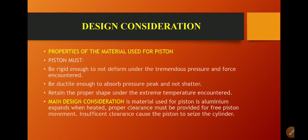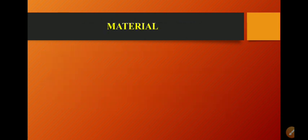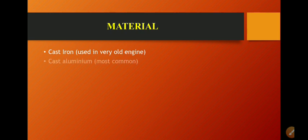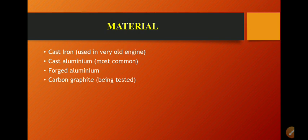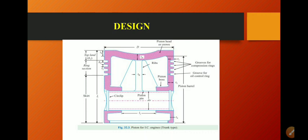When designing the piston, the proper clearance must be provided for free piston movement. If you provide insufficient clearance, it causes the piston to seize in the cylinder. If you provide too much clearance, it causes oil leakage from the cylinder. So the main design consideration is that proper clearance must be provided. Materials used for pistons include cast iron for very old engines, cast aluminium commonly used today, and forged aluminium.